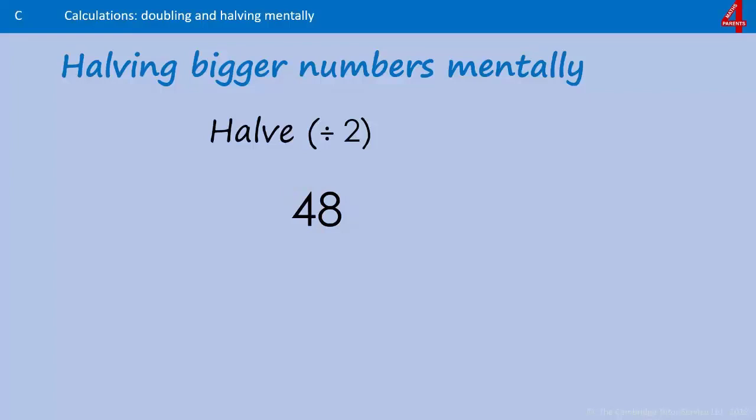Just remember that what you're doing is halving 40, which is 20, and halving 8, which is 4. You add the 20 and the 4, and that's 24. That's really useful to remember, particularly when you get